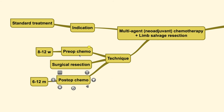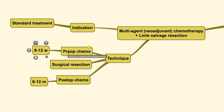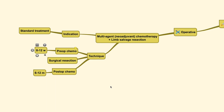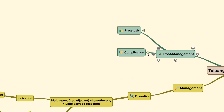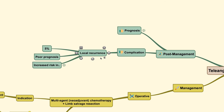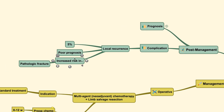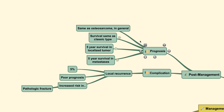For the treatment technique, pre-operative chemotherapy is generally given for 8 to 12 weeks, with drugs that may include doxorubicin, cisplatin, and methotrexate, followed by post-operative chemotherapy. For post-management, you can observe the patient for any signs of local recurrence, which has a rate as high as 5%. Patients with local recurrence generally have a poor prognosis and usually have recurrences if there was a previous pathological fracture.